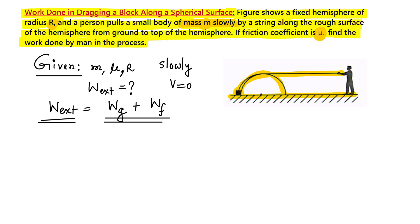Now how will we calculate this? Let us pause and try to write the equations — one for frictional work and one for gravitational work. The gravitational work will simply be the change in potential energy. Let us now solve this problem.